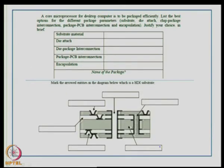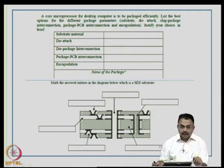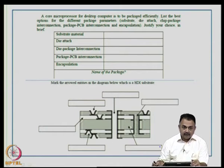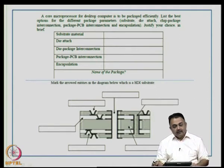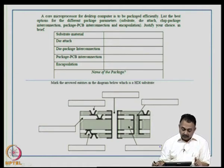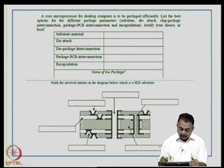The next problem involves a core microprocessor for a desktop computer that must be packaged efficiently in terms of thermal and electrical issues. You are asked to list the best options for substrate, die attach type, chip-to-package interconnection, package-to-PCB interconnection, and encapsulation type. Justify your choices.